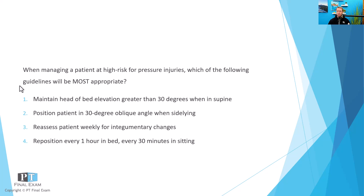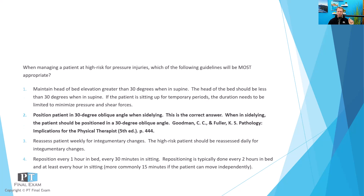When assisting with pressure injury management, you'll want to position the patient in a 30 degree oblique angle whenever in side lying. That means they're not in true side lying — not laying directly on their shoulder — but 30 degrees offset. This is where the rule of 30s comes in, applying to angulation when in side lying or when in supine.